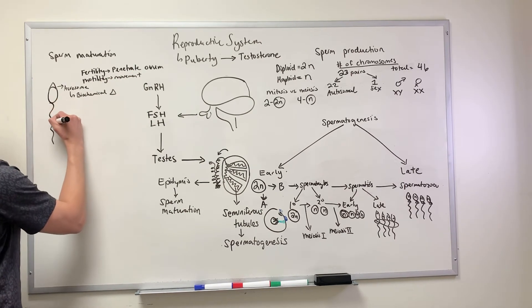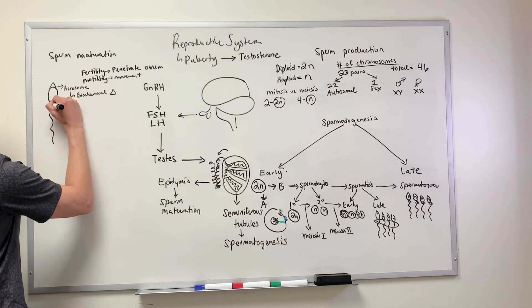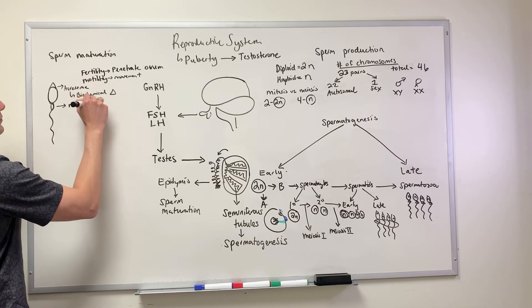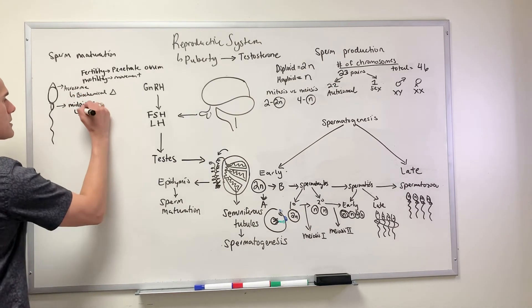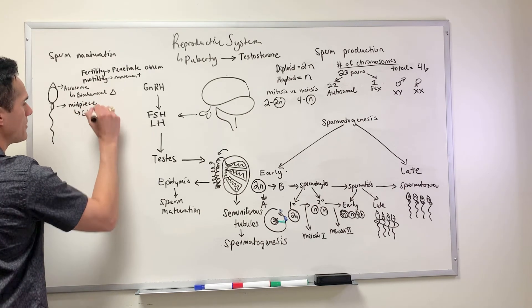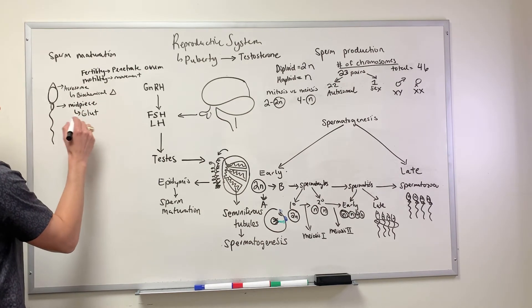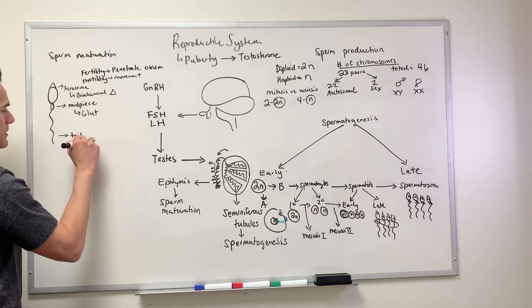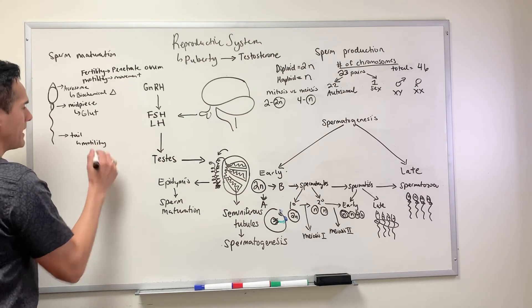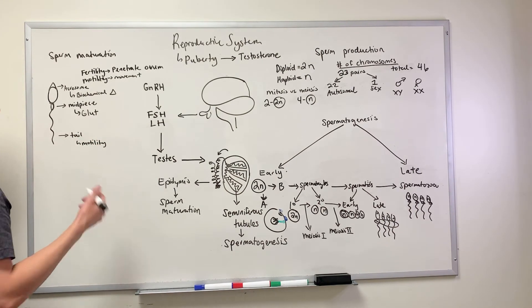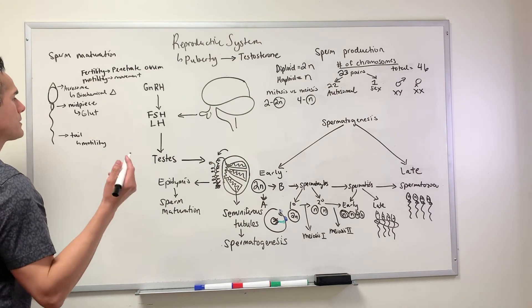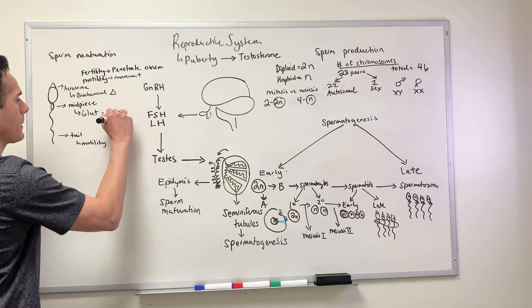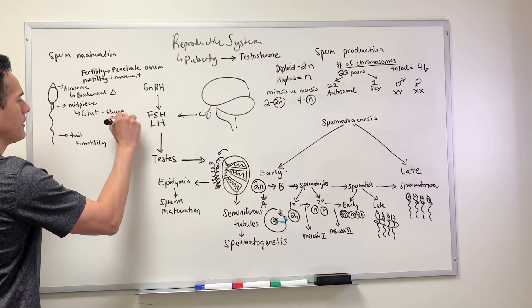What's connected here to this tail is this region here, this is what's known as the midpiece. What this midpiece acquires are these GLUT receptors, because in order to power the motility, in order to power this tail for motility, it needs an energy source. What we use for this energy source is some of the sugars: glucose, mannose, and fructose.